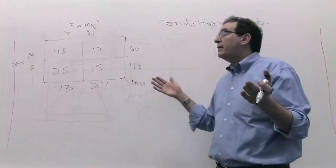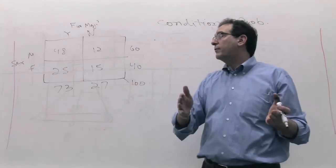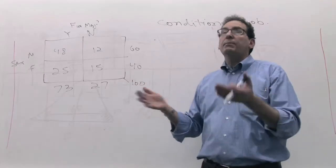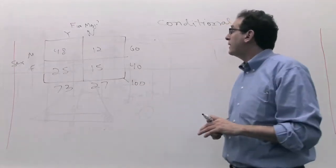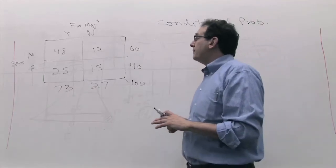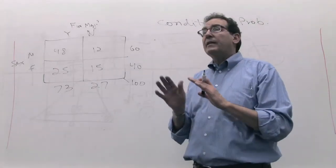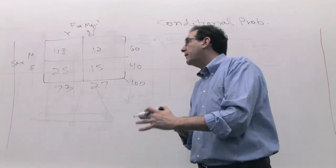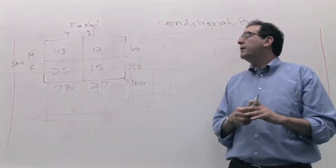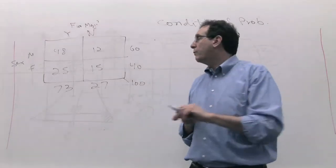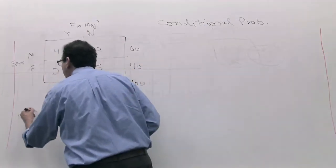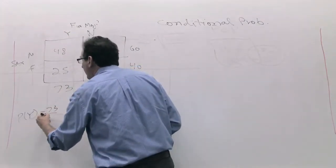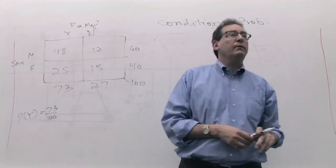Conditional probability is calculating the probability — very similar to what we've been doing — but being told further information or conditions on the problem. We can solve all these problems in chapter four by common sense without any formula, and you're entitled to do that on the test, though I prefer doing it both ways. If it's unconditional, simply 73 out of 100 is the chance of being a finance major.